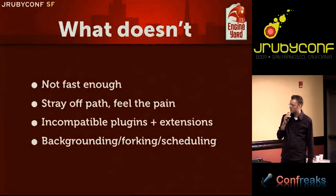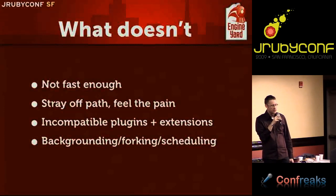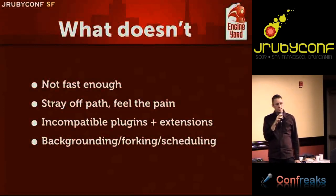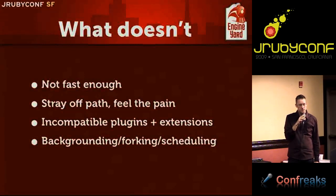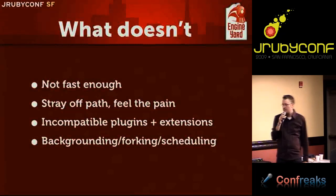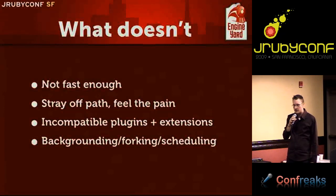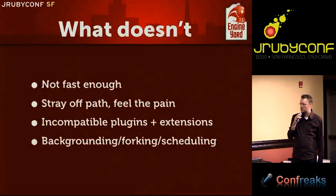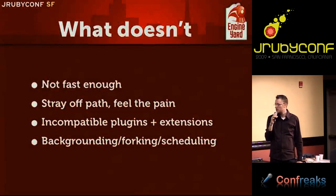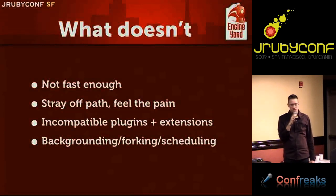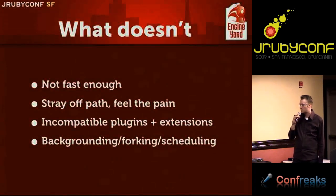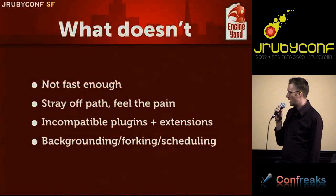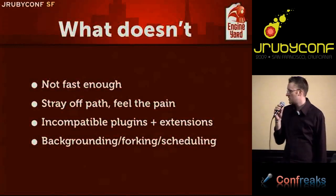There are also incompatible plugins — some Rails plugin authors don't target JRuby at all, and they may be using corners of the Ruby VM that aren't compatible with JRuby's implementation. Backgrounding, forking, and scheduling come up frequently on the mailing list. People wonder how to do these things with JRuby. We're limited by the JVM and its inability to give full control over OS process launching, so many backgrounding solutions don't translate easily to JRuby.